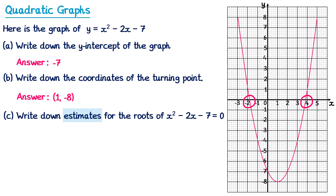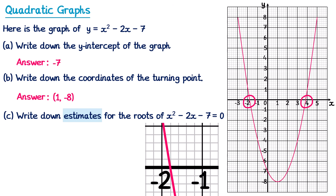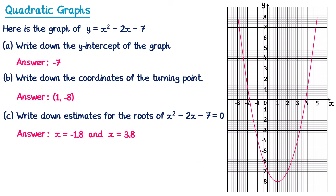Let's look at the root on the left-hand side first. Zooming in, we can see the graph crosses between negative 2 and negative 1. There are 5 squares separating these numbers, so each square represents 0.2 rather than 0.1. So the lines represent negative 1.2, negative 1.4, negative 1.6, and the crossing point at about negative 1.8. So for the first root we estimate negative 1.8. Then for the second root, it looks like it's just before 4, so it will be 3.8.